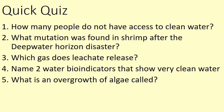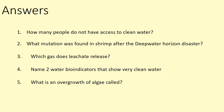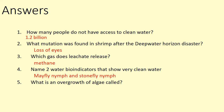A quick quiz to end — five questions. How many people do not have access to clean water? What mutation was found in the shrimp after the Deepwater Horizon disaster? Which gas does leachate release? Name two water bioindicators that show very clean water. And what is the overgrowth of algae called? The answers: 1.2 billion people do not have access to clean water. Shrimp are now growing with a loss of eyes. Leachate releases methane, a really potent greenhouse gas. The two clean-water indicators are the mayfly nymph and the stonefly nymph. And the overgrowth of algae is called an algae bloom, associated with eutrophication.